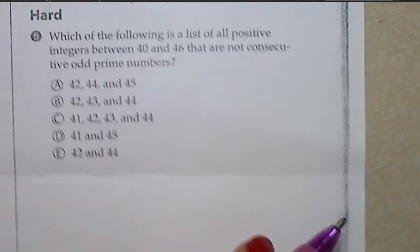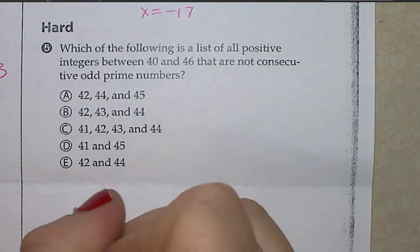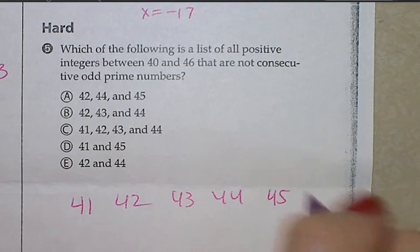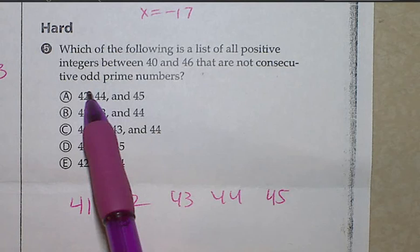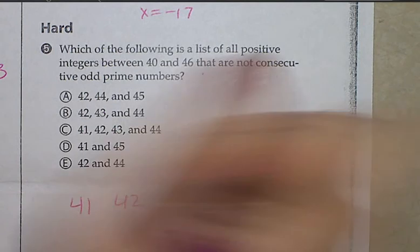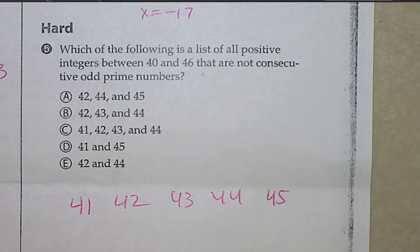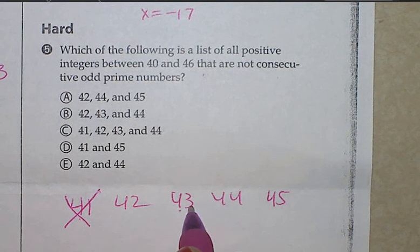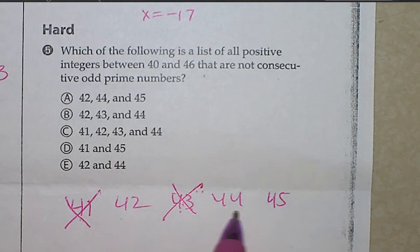Number five is kind of tricky. Which of the following is a list of all positive integers between 40 and 46? So let's write down the numbers between 40 and 46. 41, 42, 43, 44, 45. Can't do 46. We're not going to do 40. Okay. That are not consecutive odd prime numbers. So first of all, let's do the opposite. I want to actually cross out the ones that are consecutive odd prime numbers. So is this prime and odd? Is this prime and odd and is it consecutive? Yes. So it's prime, it's odd, and these are consecutive. What's remaining? 42, 44, 45. Done. So let's do that again.